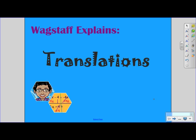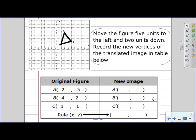Let's take a look at our first question. Move the figure five units to the left and two units down. Record the new vertices of the translated image in the table below.